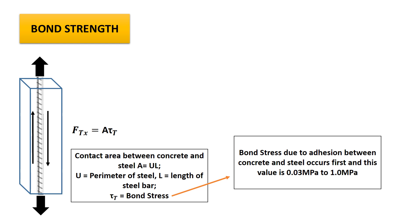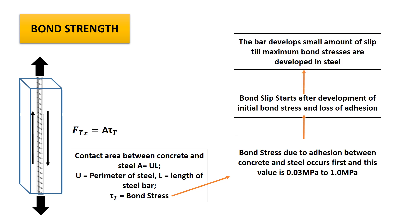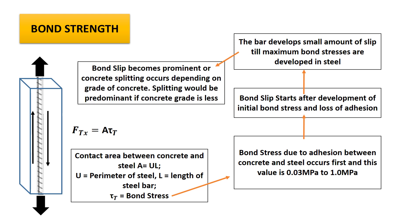Initial bond stress is developed on account of resistance due to adhesion between concrete and steel, with a value of approximately 0.03 MPa to 1 MPa. Bond slip only starts once initial bond stresses are developed and adhesion is lost. The steel bars then undergo friction bond stresses due to interlocking and friction resistance — the slip during this phase is small. Once maximum bond stresses develop and all further resistance is lost, bond slip occurs, and subsequent splitting may also occur in concrete, which is more predominant when concrete grade is lower.